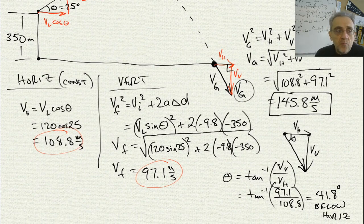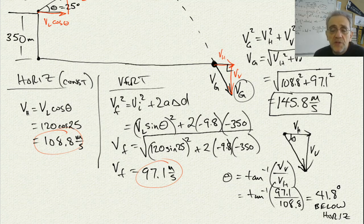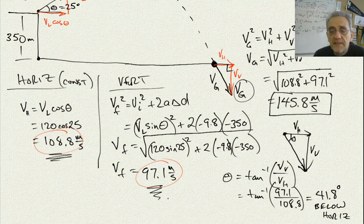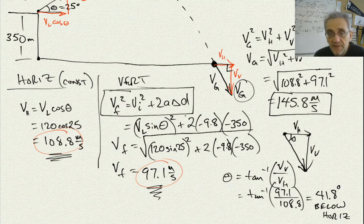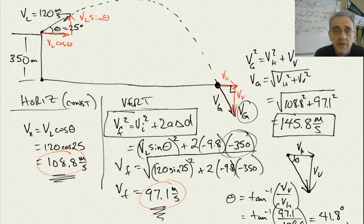So we've essentially solved this problem. Notice we didn't have to use any time calculations. We just solved for our horizontal velocity, then solved for our vertical velocity using the equation V final squared equals V initial squared plus 2A delta D. We knew that our delta D was negative 350, which is how far it went down from its original position.